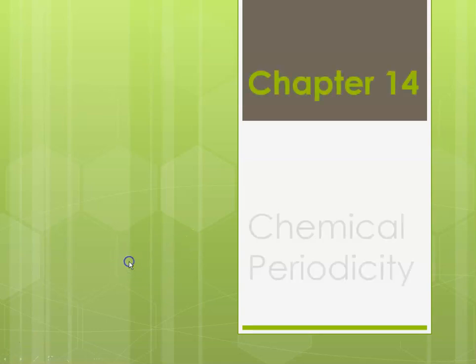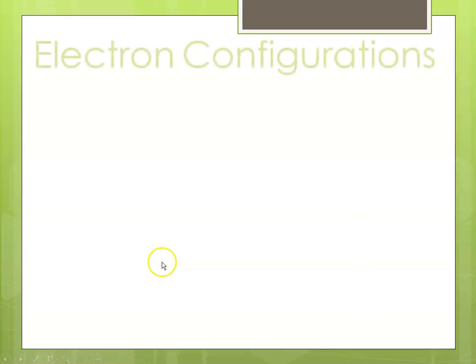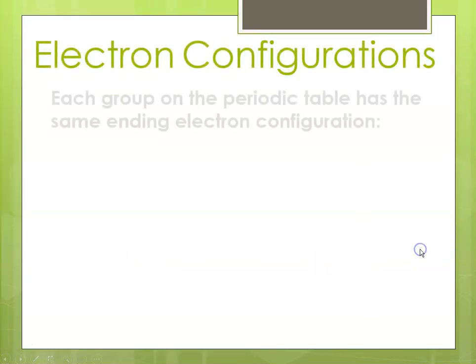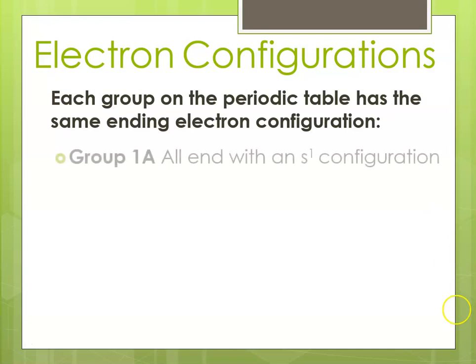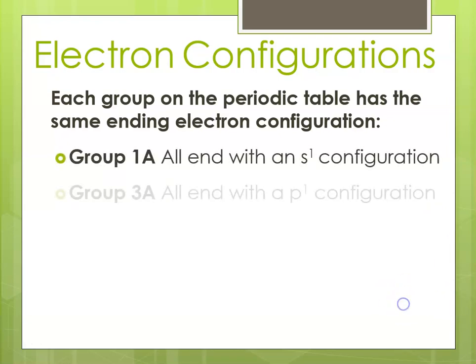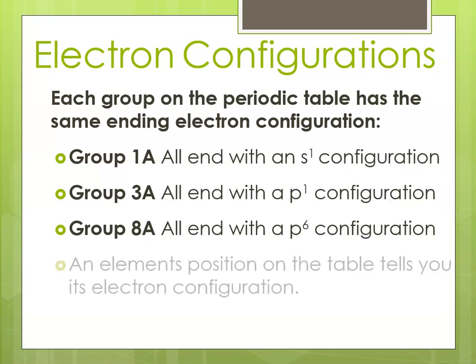Hello class, this is Ms. Augustine. We are still in chapter 14 talking about chemical periodicity. We'll start talking about electron configurations. Remember, each group on the periodic table has the same ending electron configuration. So everyone in group 1a ends with an S1, everyone in group 3a ends with a P1, and everyone in group 8a would end with a P6 configuration. So the position on the table tells you its electron configuration.